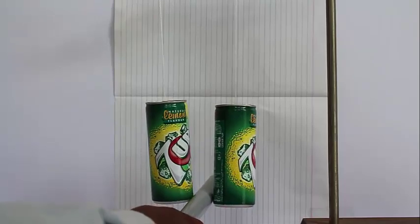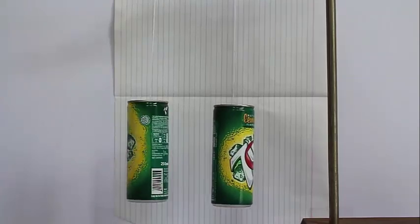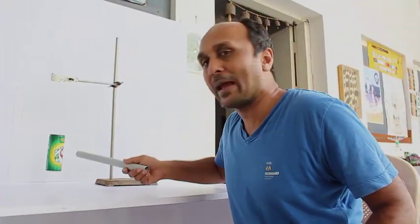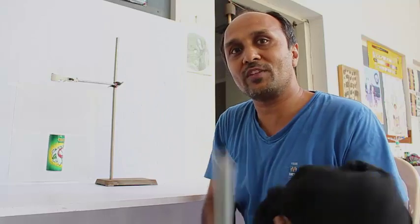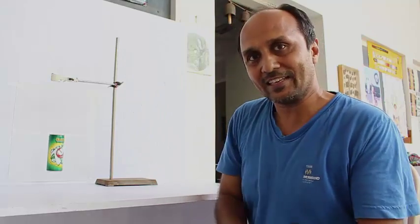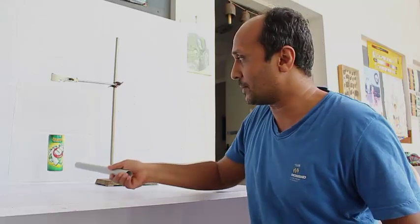So as you can see, the static charge can be pretty large to attract two cans. So if a 2g can deviated for about 3 degrees, what is the amount of the static force that we generated in our PVC pipe?